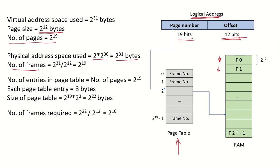How many frames will there be in physical memory? The total physical address space is 2^31 bytes and the page size (equal to frame size) is 2^12 bytes. Dividing gives us a total of 2^19 frames in physical memory, from frame 0 to frame 2^19 − 1.